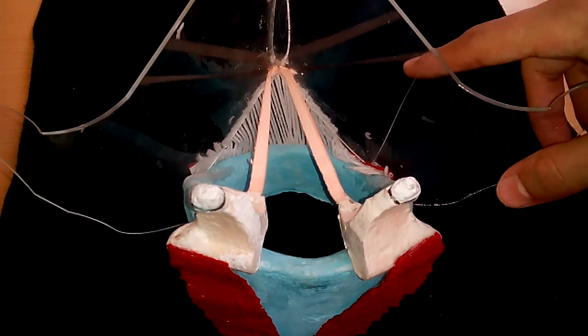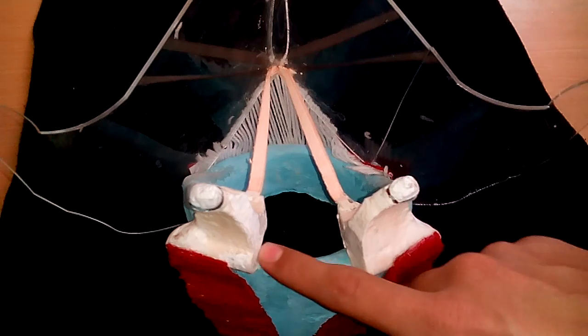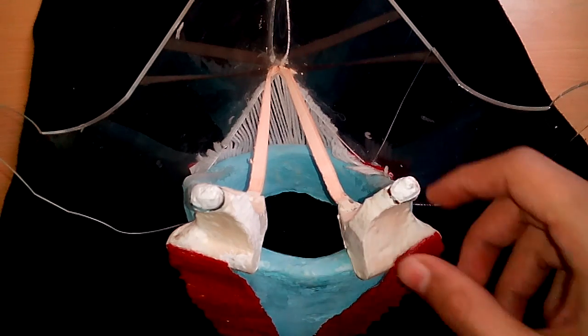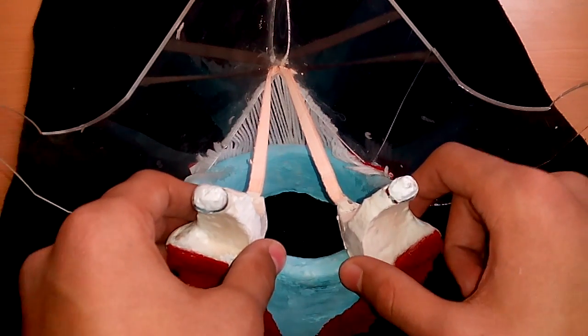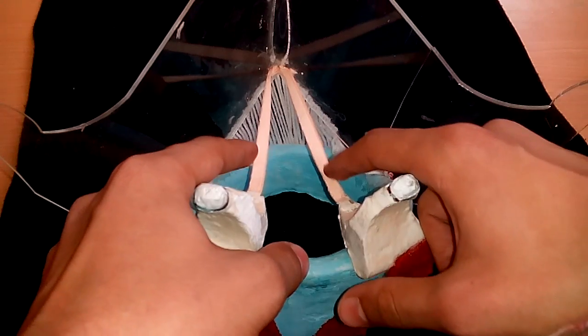Once again, this is thyroid cartilage, this is cricoid cartilage, these are arytenoids and these are vocal folds.